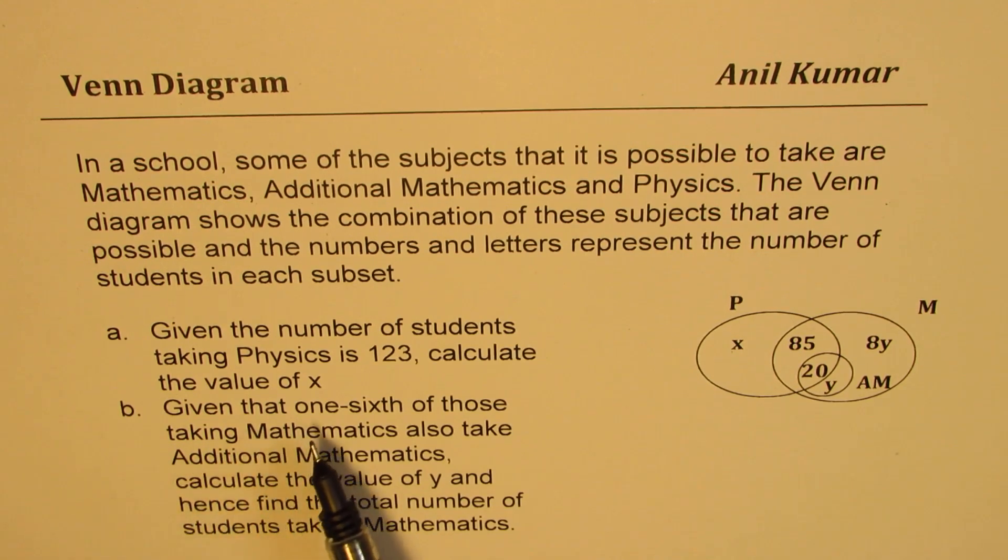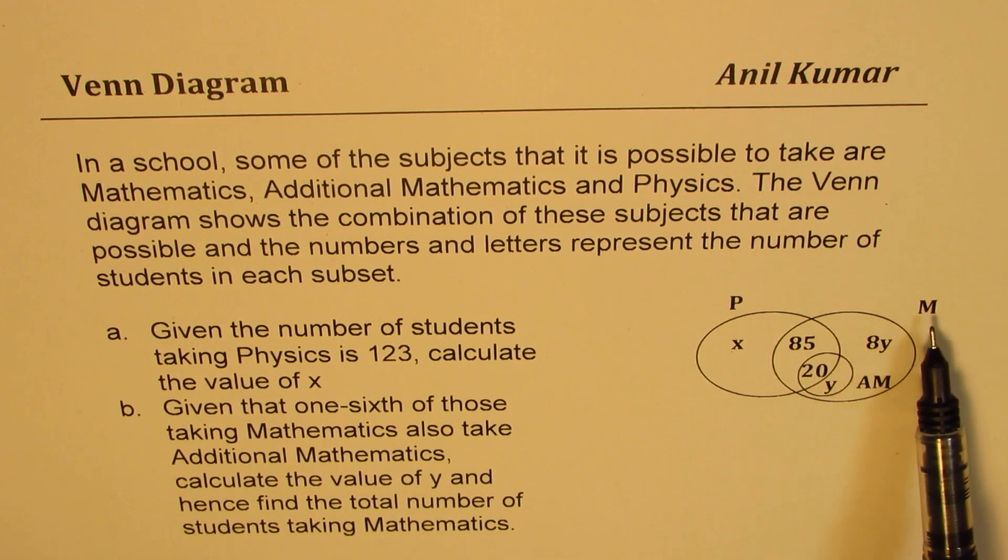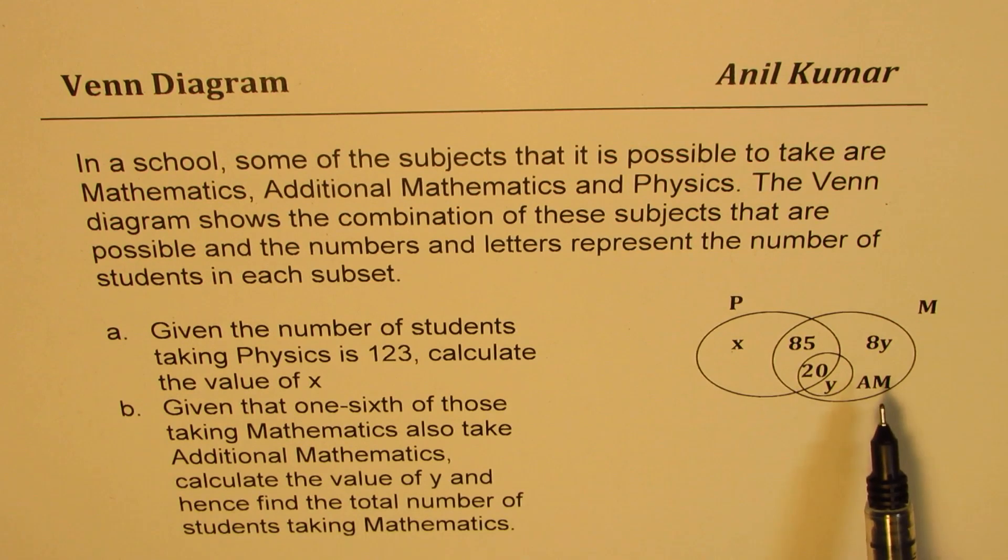Given that one sixth of those taking mathematics also take additional mathematics, calculate the value of Y and hence find the total number of students taking mathematics. So that's the value of Y which you need to find. And this small set is the subset of mathematics students who are taking additional mathematics. I hope that makes sense.